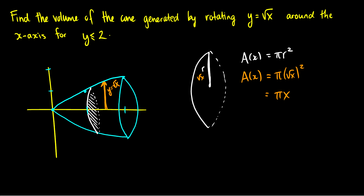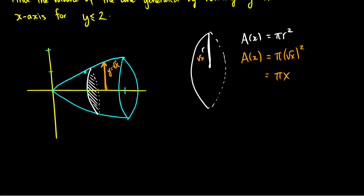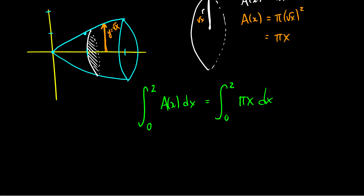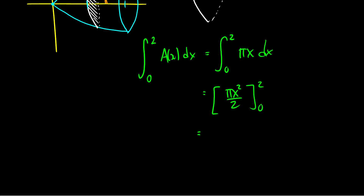In order to get the volume of the entire solid from 0 to 2, we take the integral from 0 to 2 of A(x) dx, which is the integral from 0 to 2 of pi x dx. Taking the antiderivative, we get pi x squared over 2 evaluated from 0 to 2. Plugging in 2 gives us 4 pi over 2, so the volume of our solid is 2 pi.